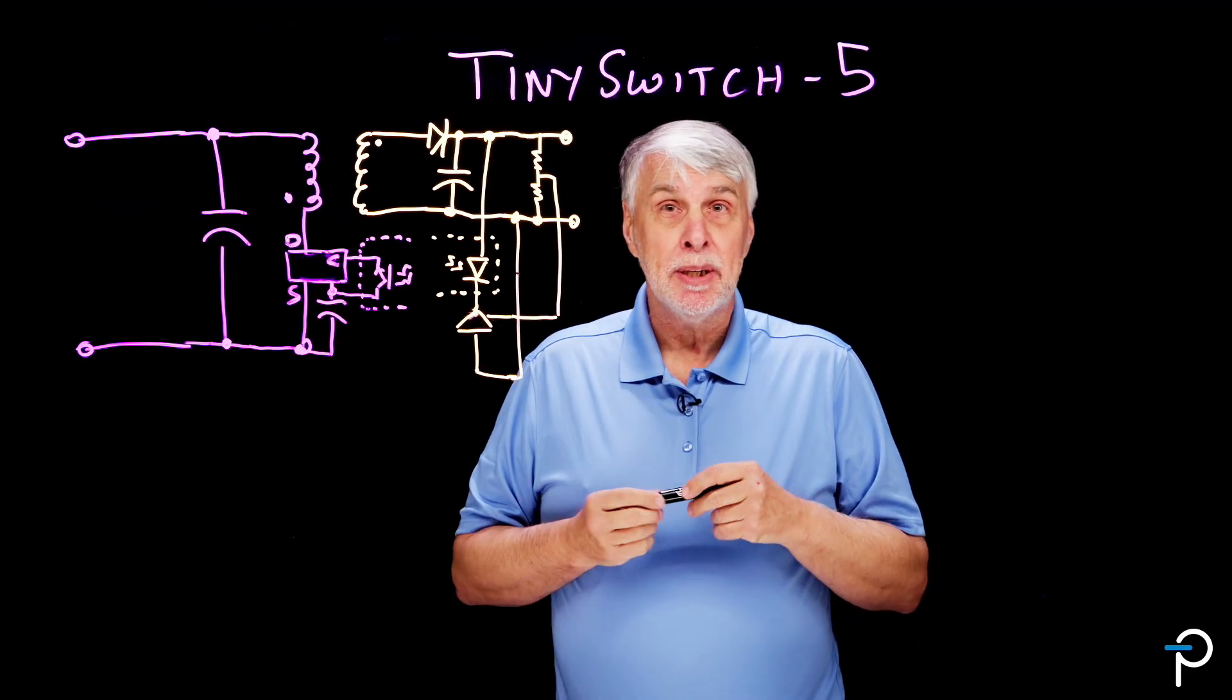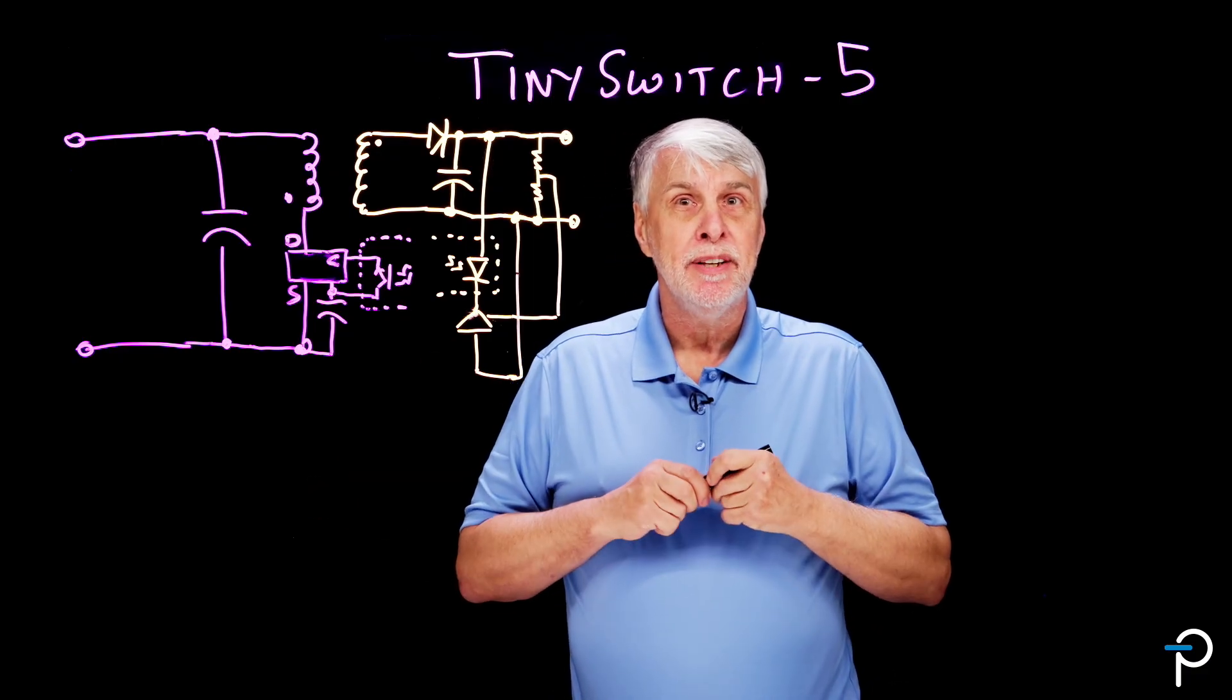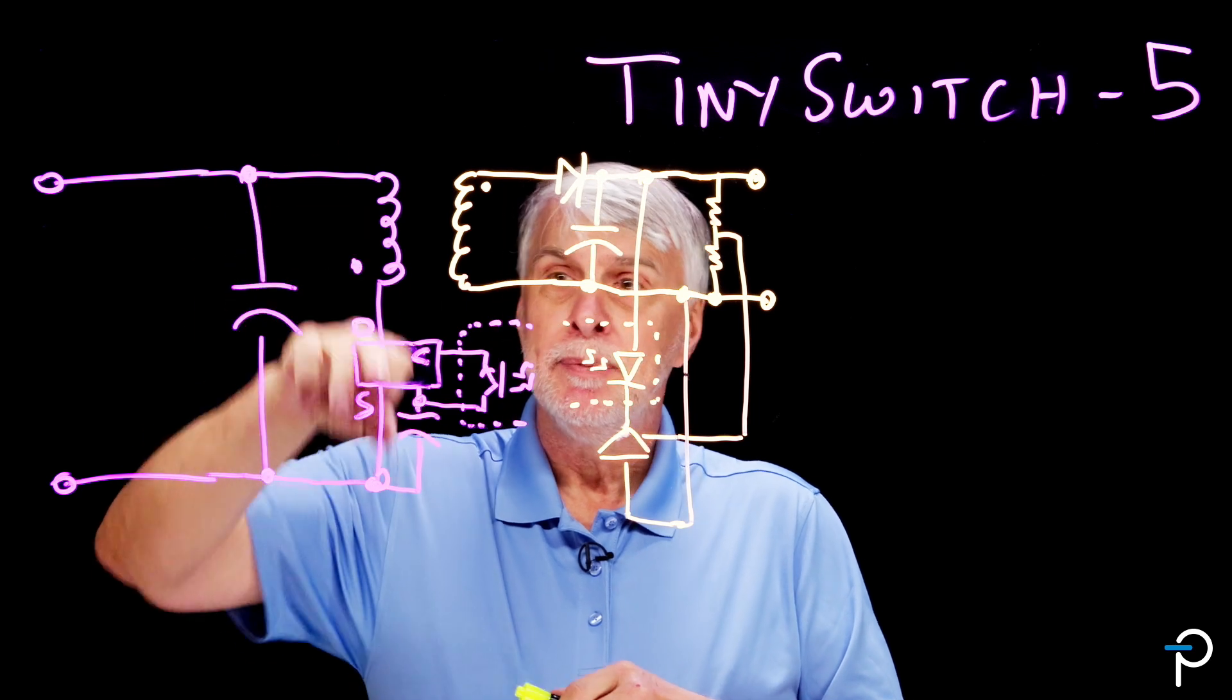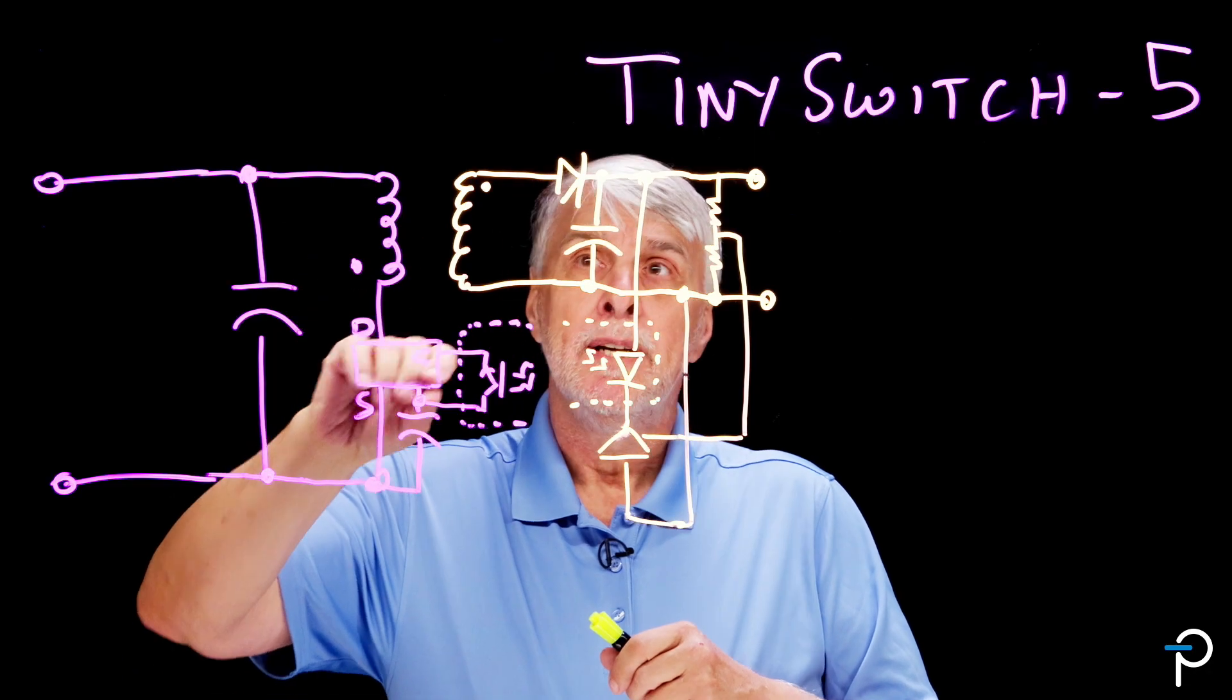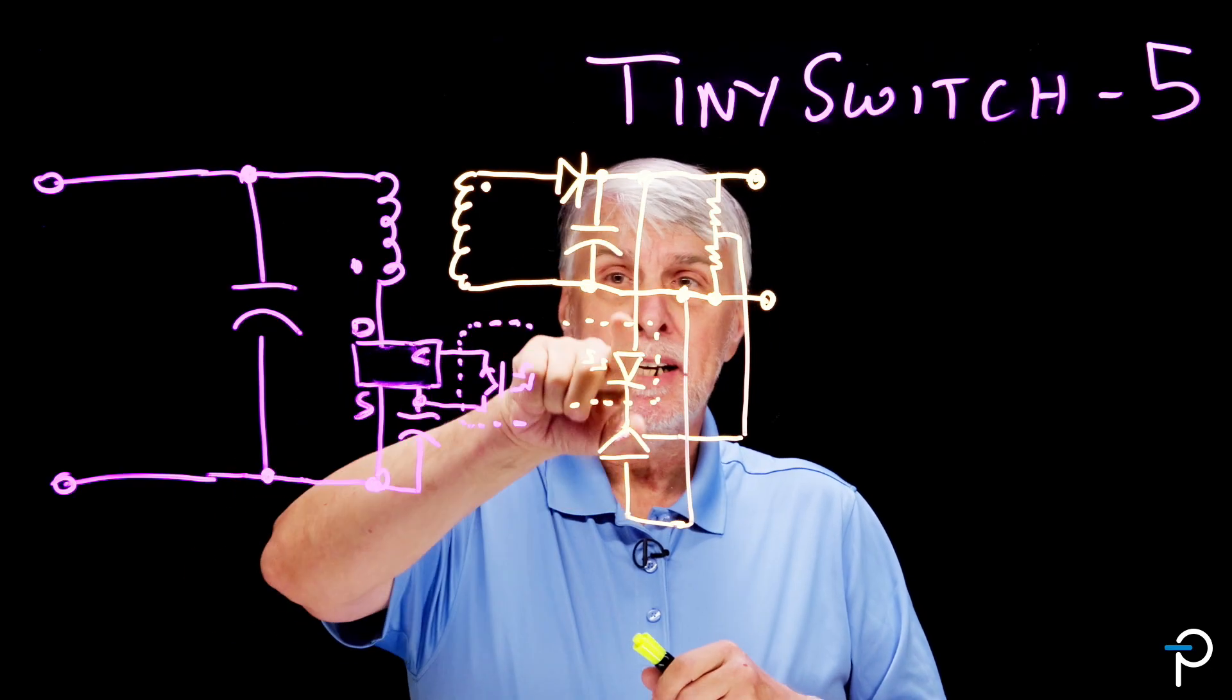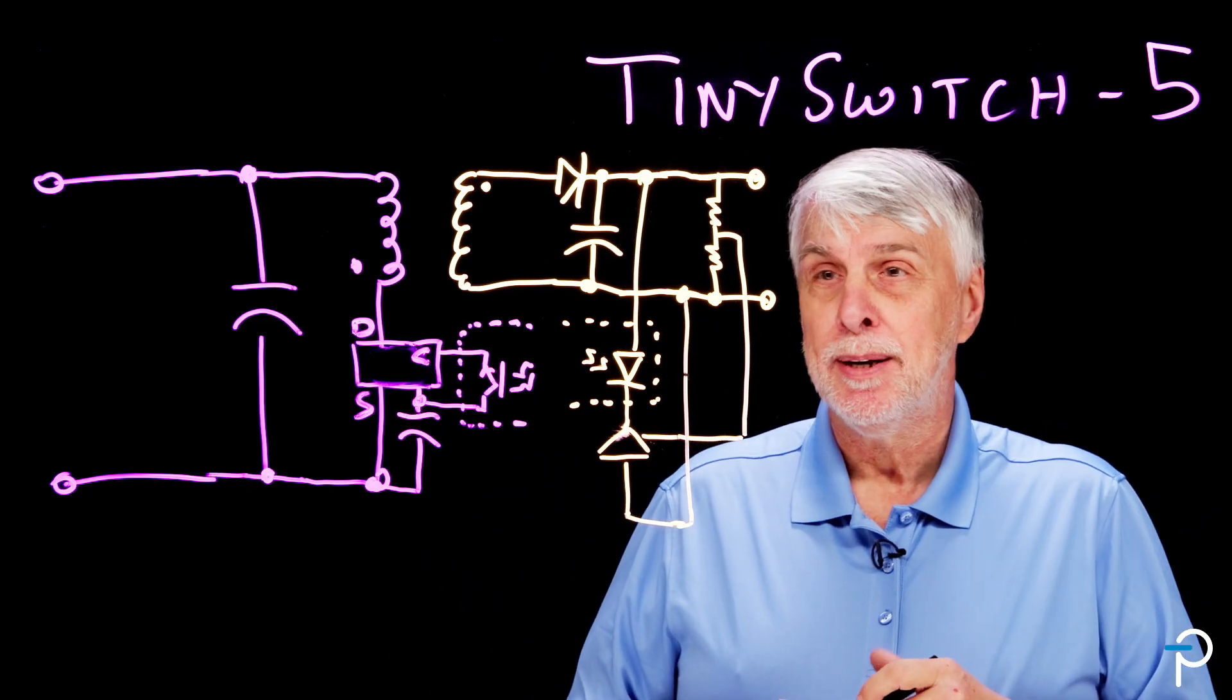What I have here is a schematic of a TinySwitch offline flyback power converter and I'm going to talk about how we've been able to improve efficiency with a new family. I've taken off the input filter. We have a bulk capacitor. I've missed off the primary clamp. We have a flyback winding, a power transistor, in this case it's a MOSFET, an output winding, a rectified diode, output bulk capacitor and then output sensing circuit and a little feedback optocoupler providing input to the primary side control chip. That's pretty much all you need to provide a regulated power supply.